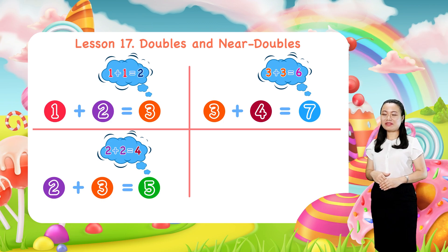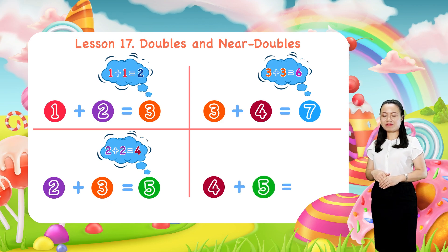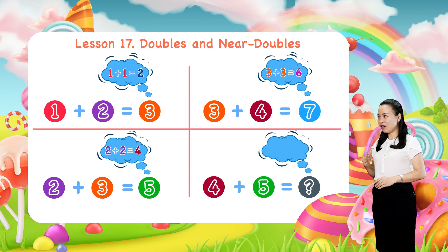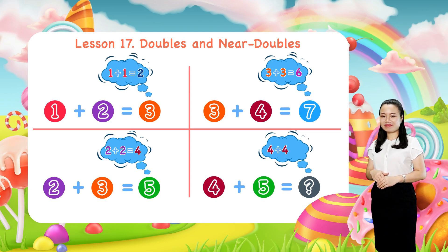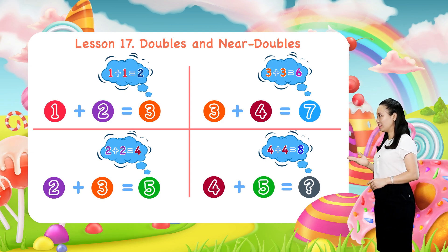If you have to add 4 plus 5, then think: 4 plus 4 equals 8, then add on 1 to get 9.